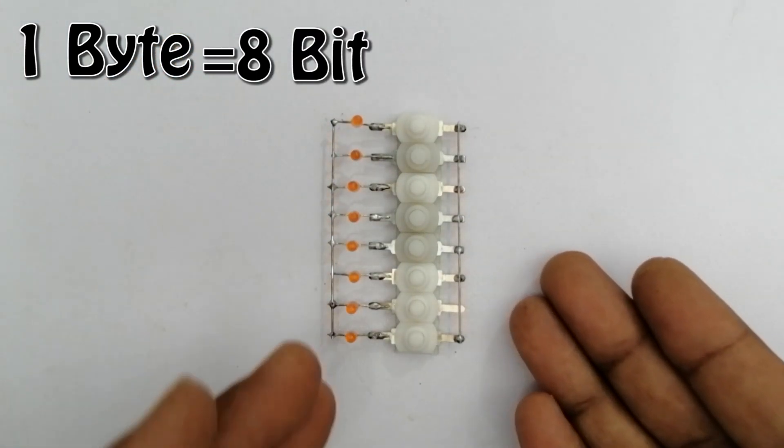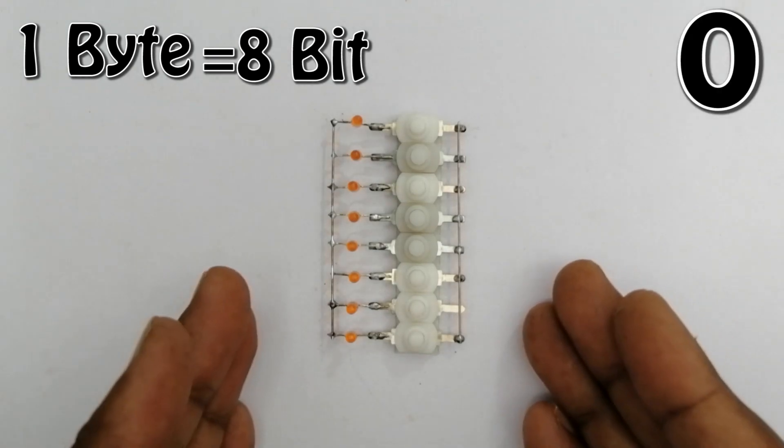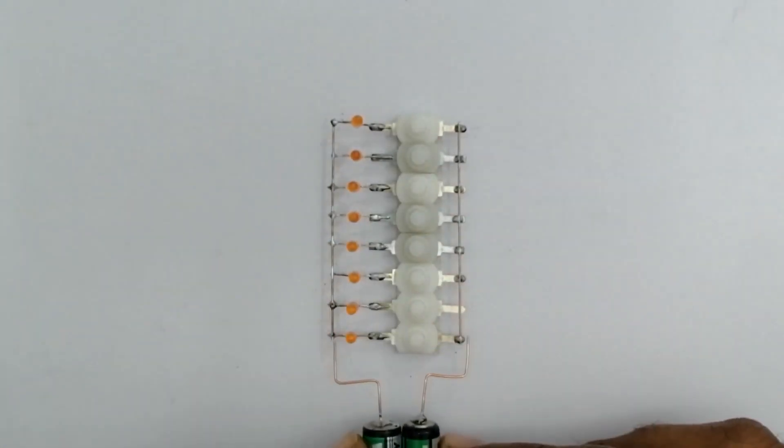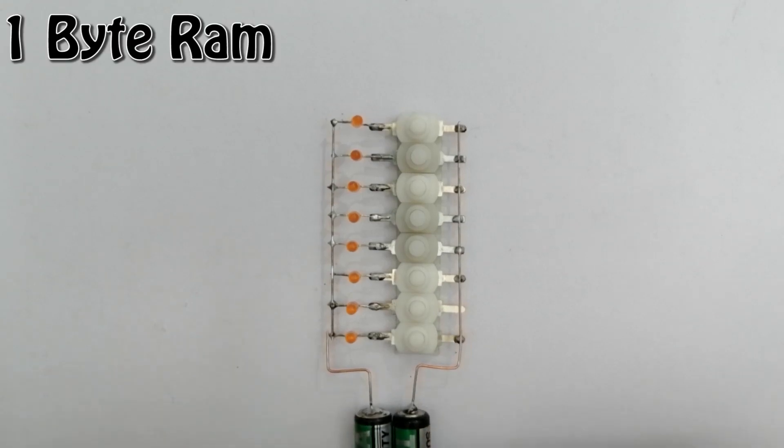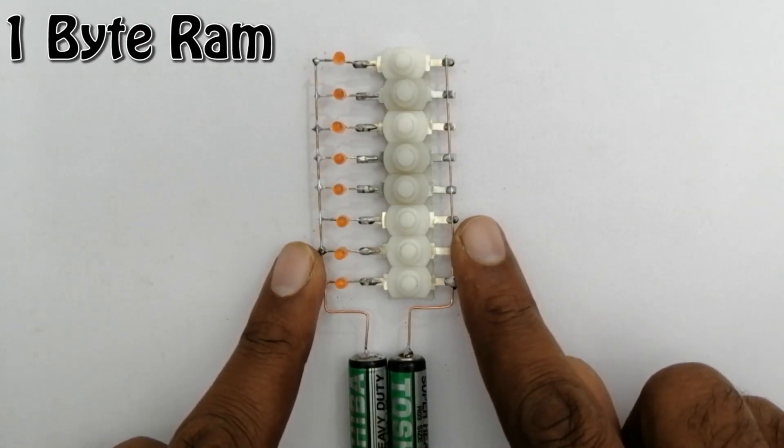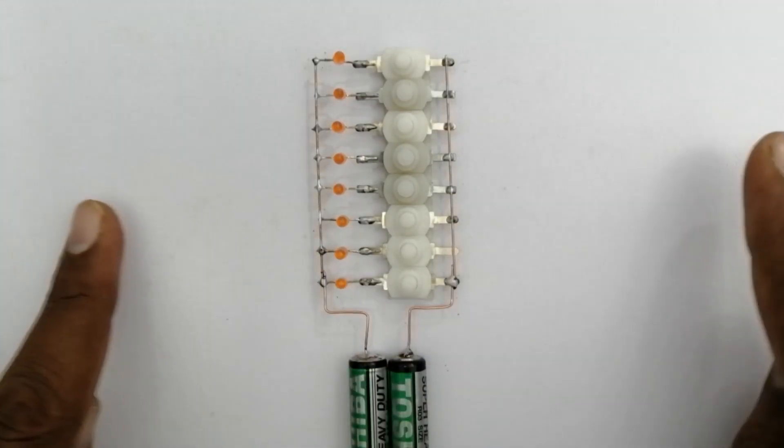In a bit only 2 values are possible, either 0 or 1. Now we connect the battery to this system. Our 1 byte RAM is now ready to use. Let's save the data in it.